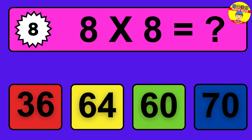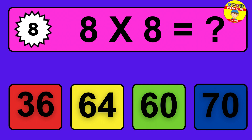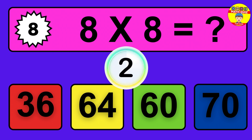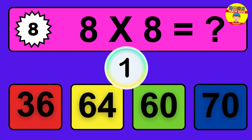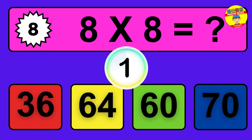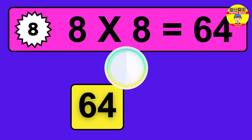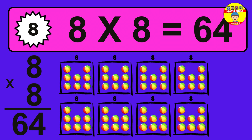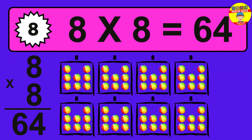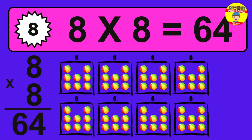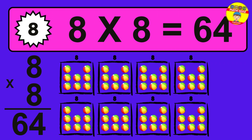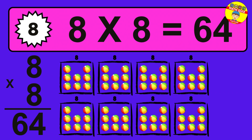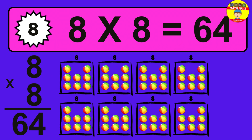Question 8. 8 times 8 equals what? The answer is 8 times 8 is 64. To calculate, we have 8 groups with 8 balls each one. So how many balls do we have? 64 balls.